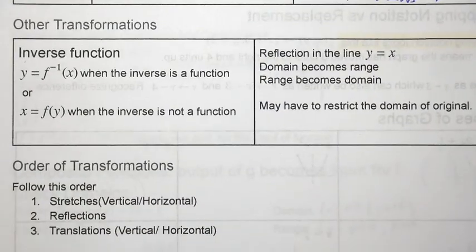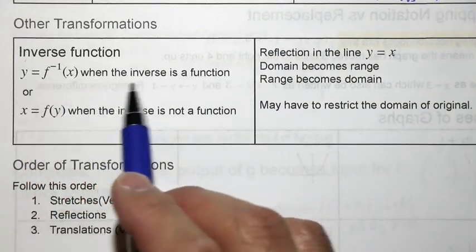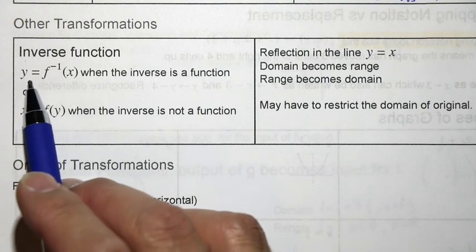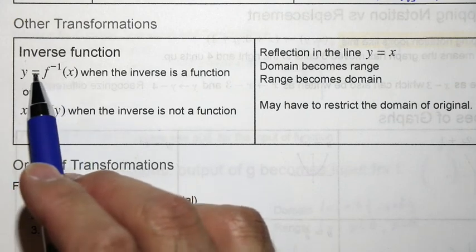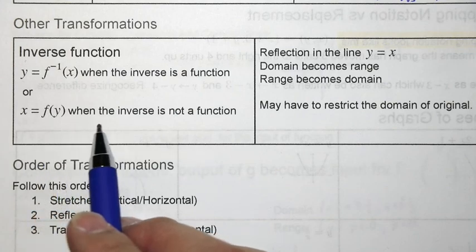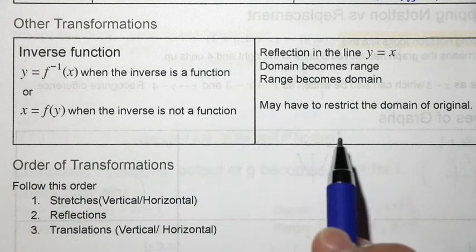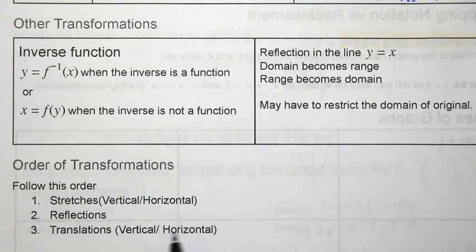Other transformations that you have to remember, the inverse function. If it is an inverse, if the inverse actually is a function, you can use this notation, y equals f inverse x. Or you can use x equaling f of y if the inverse is not a function. Remember that you may have to restrict the domain of the original in order to make sure that the inverse is a function.